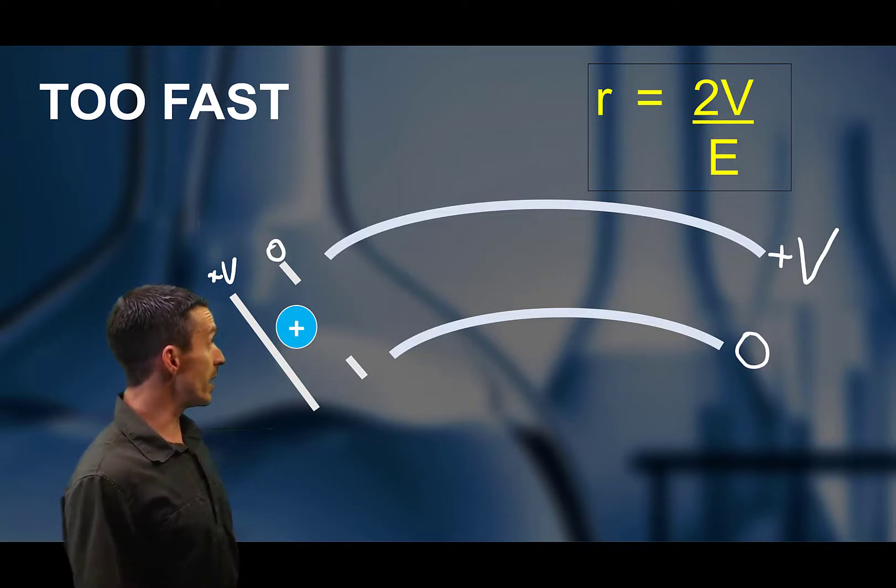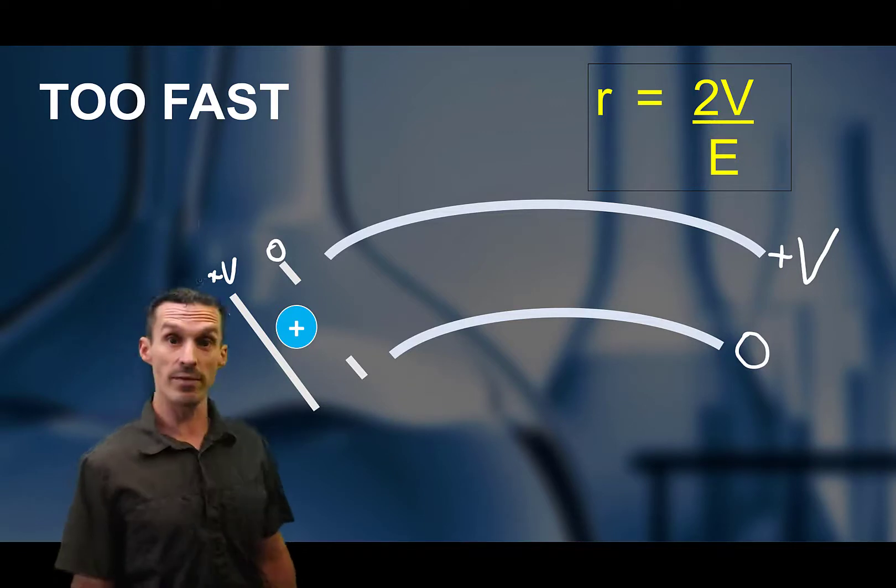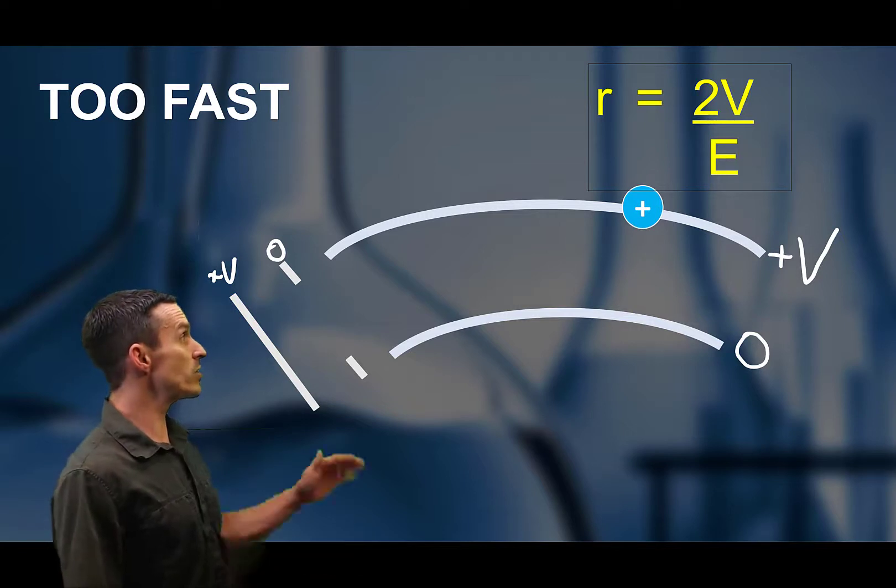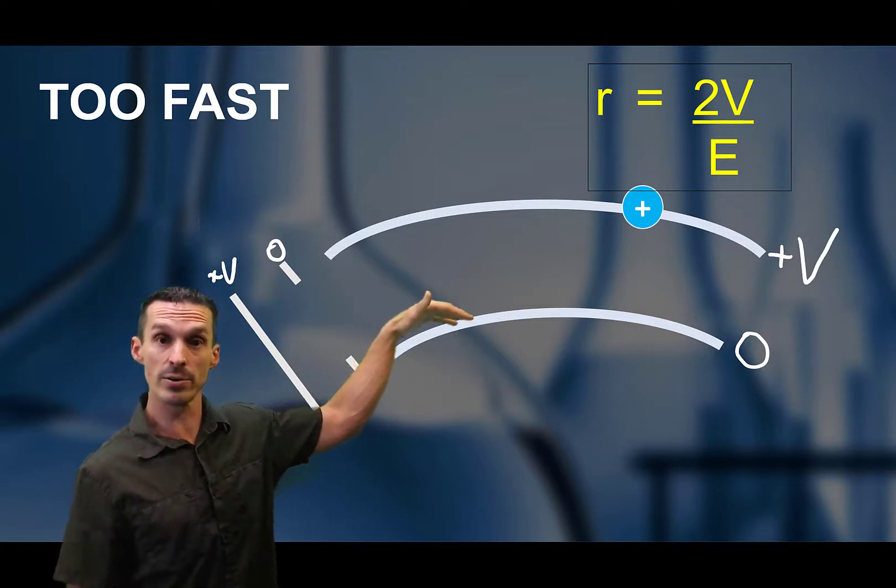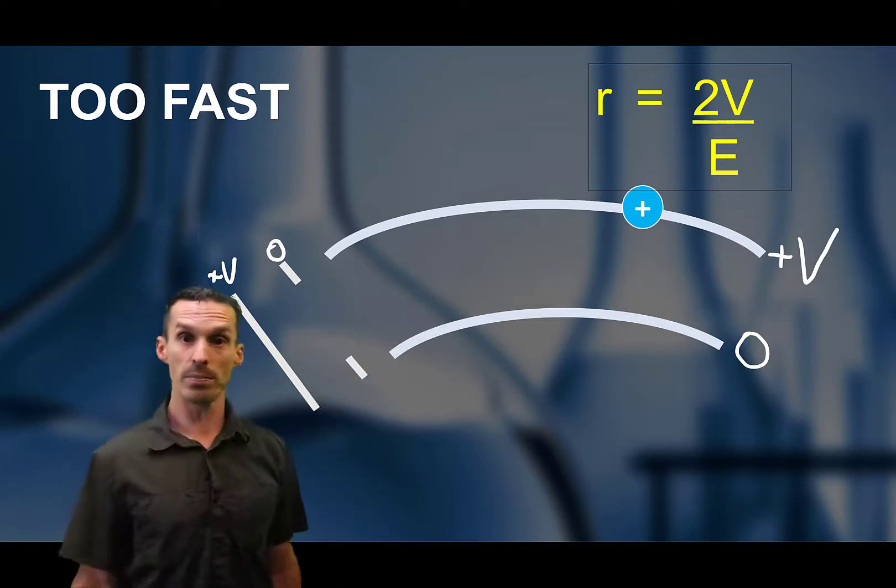Let's say we've got an ion and it's accelerating extremely fast. What's going to happen to it? Well, it's going to be moving too quickly to curve it down through this path. So it's going to strike the top plate.